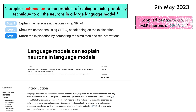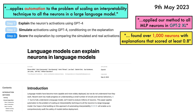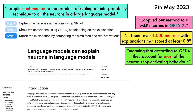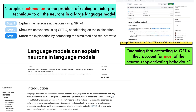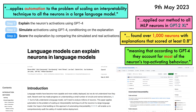The authors applied the method to all MLP neurons in GPT-2 XL, where they found over 1,000 neurons with explanations that scored at least 0.8, meaning that according to GPT-4, they account for most of the neurons' top activating behavior. The authors release code, tooling, and data to allow others to build on their work.